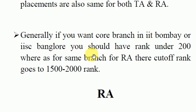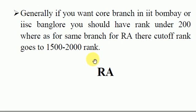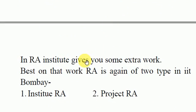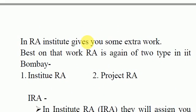Generally, if you want a core branch in IIT Bombay or IISc Bangalore, you should have a rank under 200 for TA, whereas for the same branch under RA the cutoff goes up to 1500 to 2000 ranks. So if you want a top college for your MTech, you can choose RA.